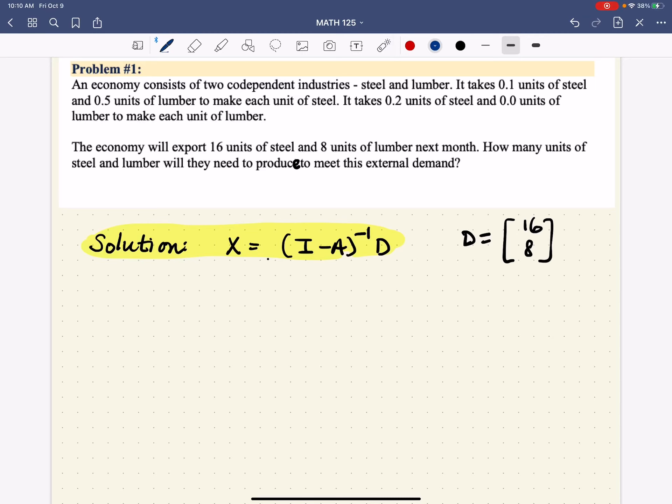All right, so what we have here is an input-output model where we have two basic commodities, steel and lumber, and they're kind of codependent on each other, meaning that they not only depend on themselves for production, but they depend on each other for production.